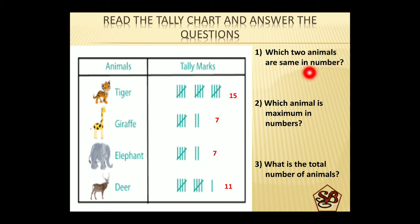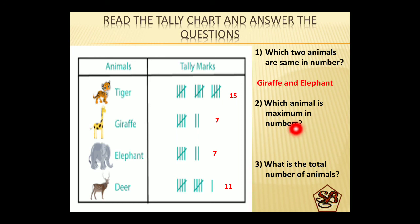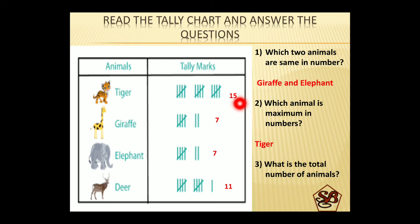Which two animals are same in number? We will look at these numbers: 7 and 7, corresponding to giraffe and elephant. So giraffe and elephant are same in number. Next question: which animal is maximum in numbers? Maximum means highest. So 11, 7, 7, 7, 15 — 15 is the highest, so tiger is the highest one. What is the total number of animals? To find the total, we add all these numbers: 15 plus 7 plus 7 plus 7 plus 11 gives us 40. So the total number is 40.